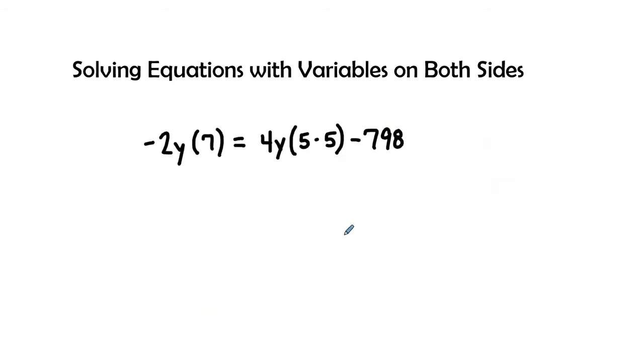Let's go ahead and try another problem. In this problem we have a negative 2y times 7, so we see a parenthesis, so we know that we are going to be multiplying those two terms together. So negative 2y times 7 equals 4y times the quantity of 5 times 5 minus 798.